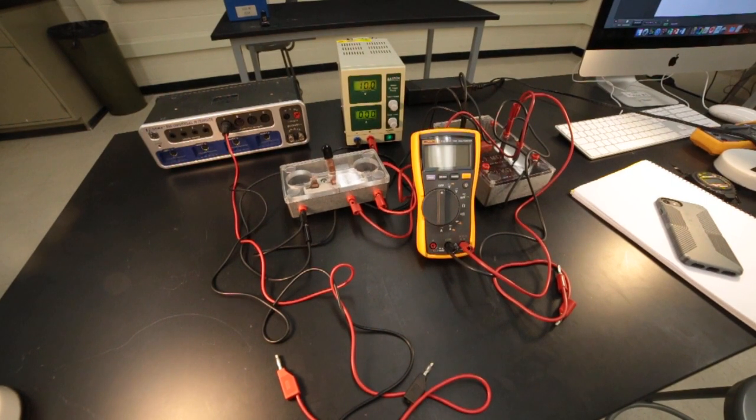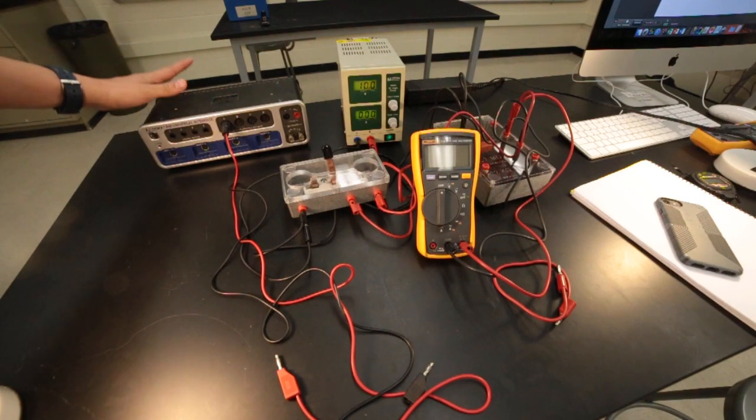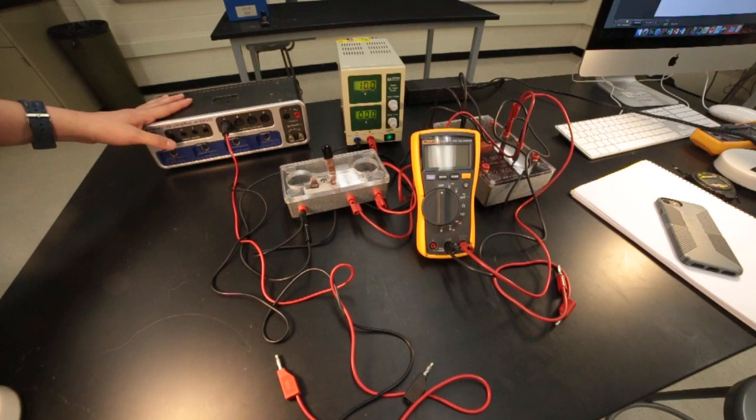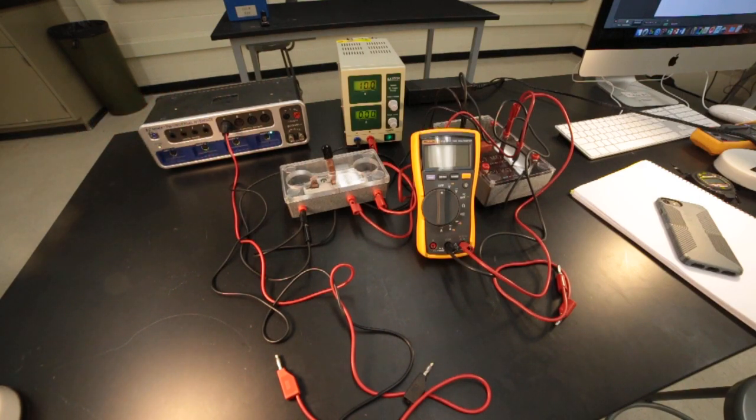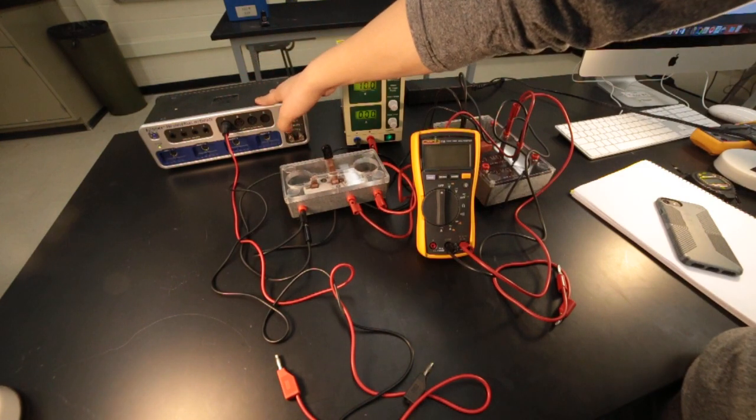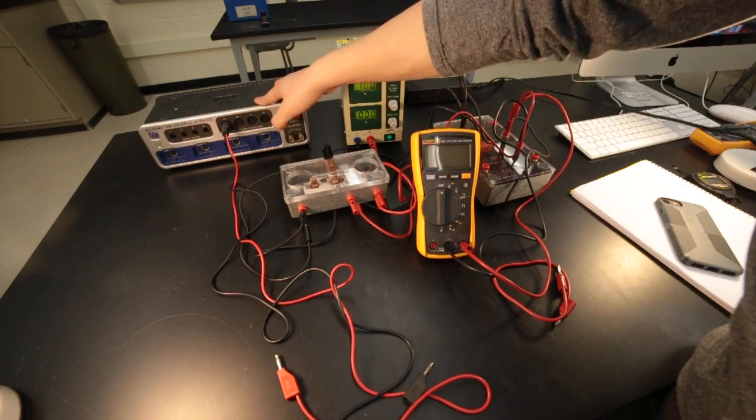Now let's use the PC to do the timing and voltage data taking for us. We're going to use this device. The way to use it is just turn it on and basically use it as a DC voltage meter.